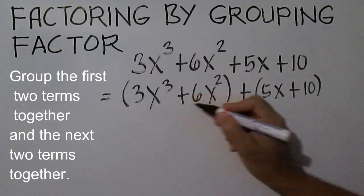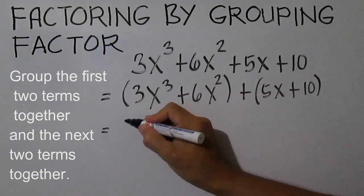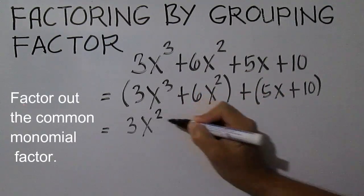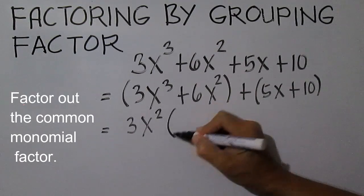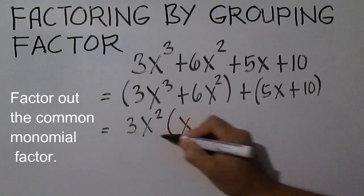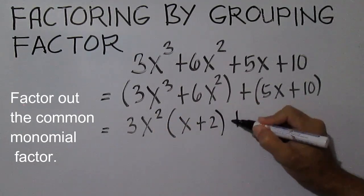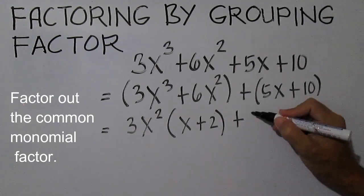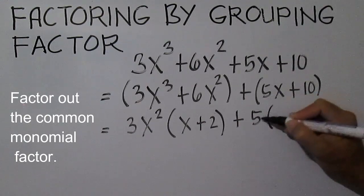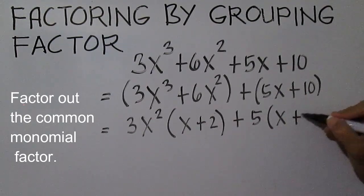Next, factor out the common monomial. The common monomial is 3X squared, and the other factor is X plus 2, since 6X squared divided by 3X squared is 2. For the second group, 5X plus 10, the common monomial is 5, and the other factor is X plus 2.